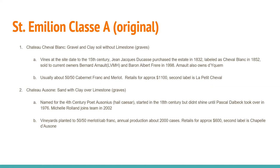The two original Premier Grand Cru Classé A estates: Cheval Blanc sits in the northwestern Graves area over gravel and clay soil with a little limestone. Vines date back to the 15th century; Jean-Jacques Ducasse purchased the estate in 1832 and labeled it Cheval Blanc in 1852. It was sold to current owners LVMH and Baron Albert Frère in 1998. It's usually about 50-50 Cabernet Franc and Merlot. The second label is Le Petit Cheval.